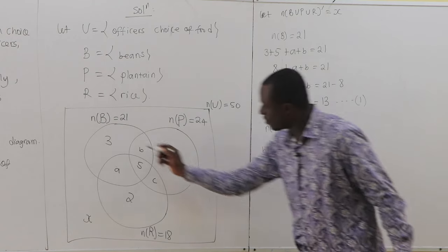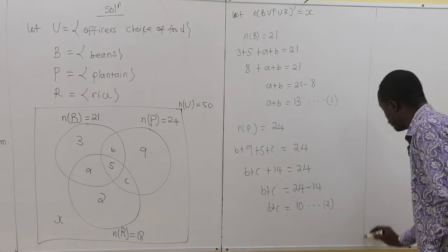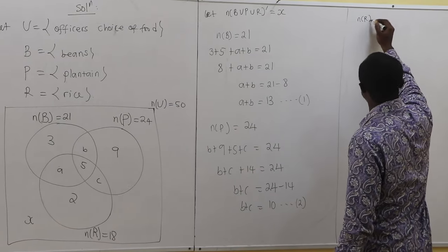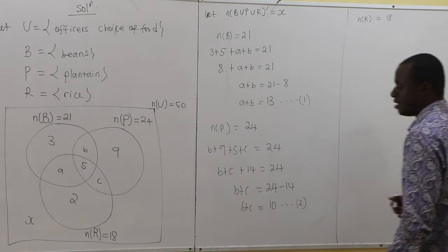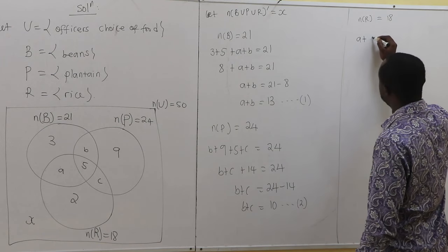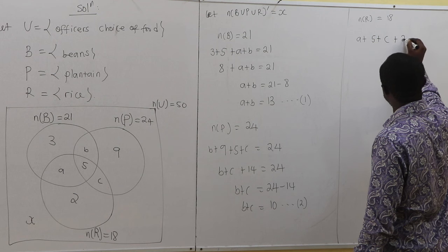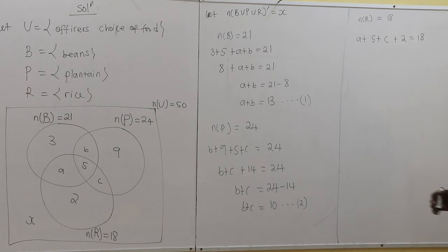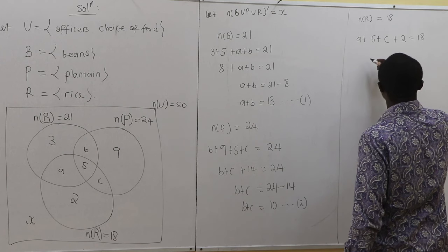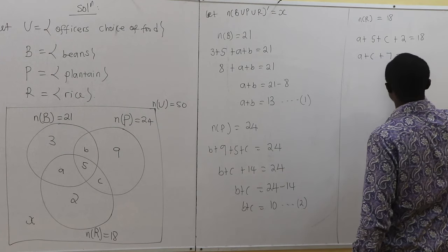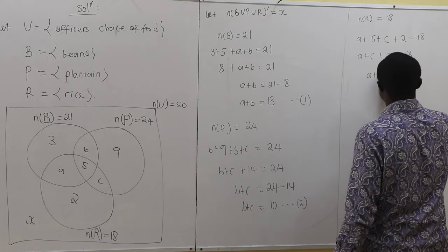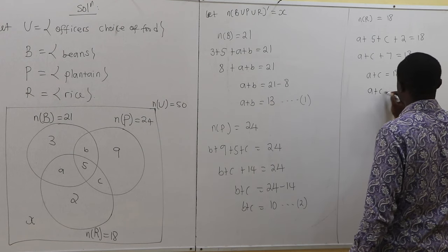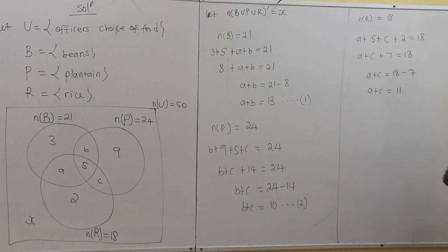And then we also have that number of R is equal to 18. Addition of everything in the region of R gives us A plus 5 plus C plus 2 equals 18. So A plus C plus 7 equals 18, meaning A plus C equals 11. Let's call this equation 3.